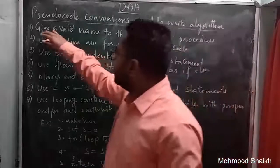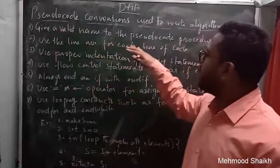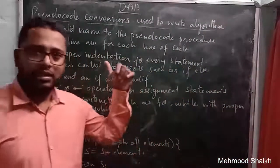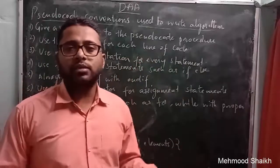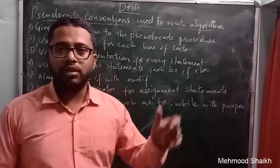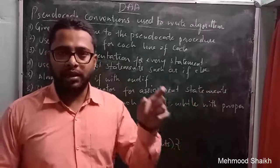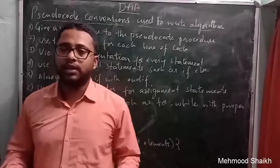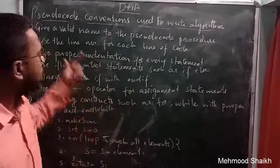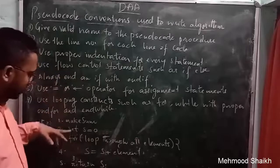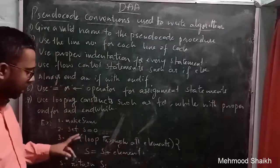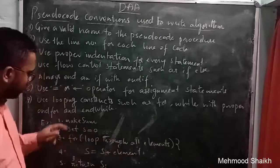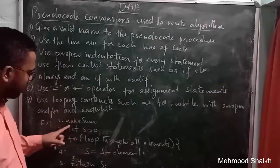The first point says: give a valid name to the pseudocode procedure. Whenever you are writing a pseudocode, it is a must that you give a valid and meaningful name to it, so that by reading the name itself, the reader will come to know the purpose of that pseudocode. Here I have written an example of making a sum of all the elements inside a loop, and I have given the name 'make sum' to the pseudocode.